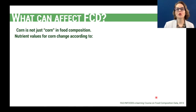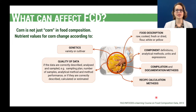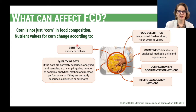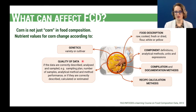When we go to look for food composition data in a database, we need to be aware that many different factors can affect the composition of foods. Let's take corn as an example. If I'm looking for data regarding the composition of corn, I need to be aware that genetics can affect the composition — depending on the variety or cultivar used to produce the data, we can have variations. We also have variations related to the quality of data, meaning the quality of the food composition table itself.